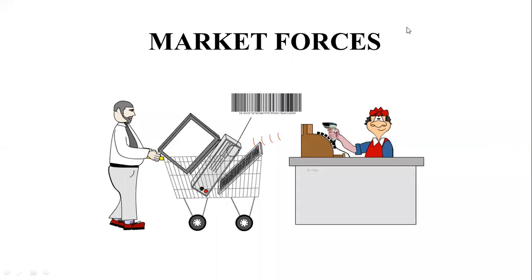What are the market forces? Demand and supply. What are the triggers behind the demand and the supply? As you see here in this picture, this is the person who will take the order. The buyer is the person who is willing and able to buy — he must be willing, and he is able, which means that he will pay for these items.